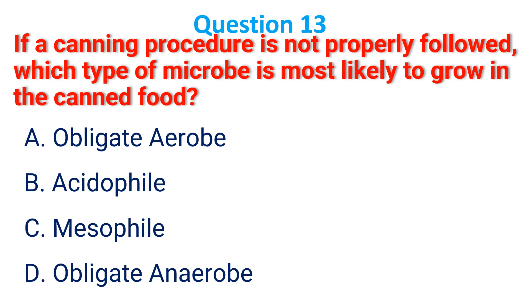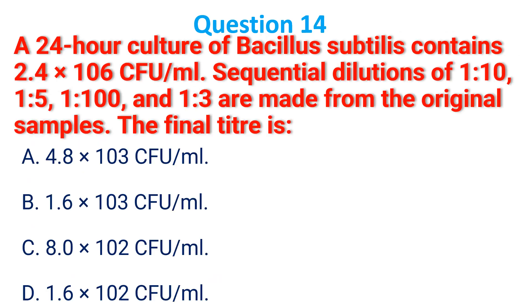If a canning procedure is not properly followed, which type of microorganism is most likely to grow in canned food? The correct answer is B: obligate anaerobes.